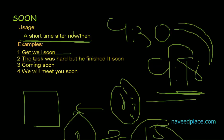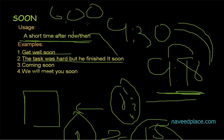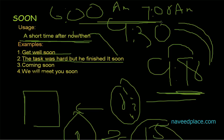The second example is: 'The task was hard but he finished it soon.' This is showing the past — for example, at 6 a.m. the task was very hard, but he finished it at 7 a.m. So we are talking about the past, not the present.